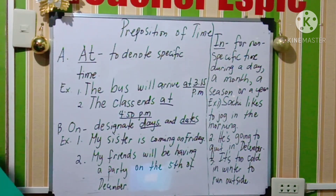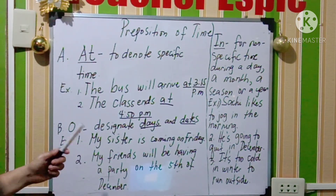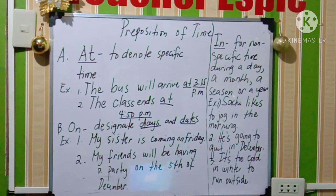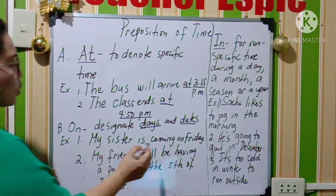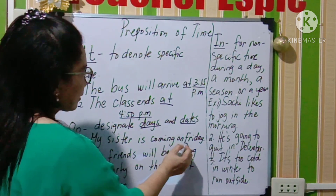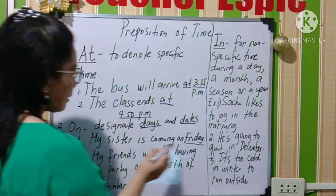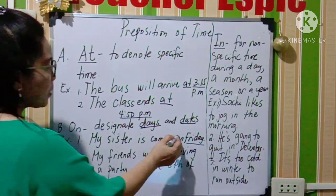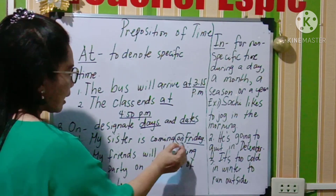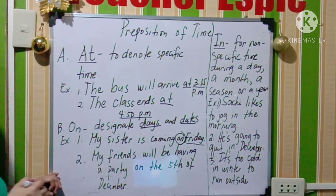So like for example, my sister is coming on Friday. Ito po yung designate ng days — ito po yung preposition natin ng on.